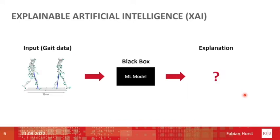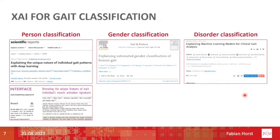Machine learning approaches have been increasingly used in biomechanics, and we would like to obtain similar explanations for this type of data as we saw for the image. Since explainability methods have not been used in biomechanics before, we wanted to demonstrate the possibilities and usefulness of explainable AI methods for this field. Over the last years we have published different papers on different classification tasks and datasets, and today I would like to give you some insights we have gained from those analyses.